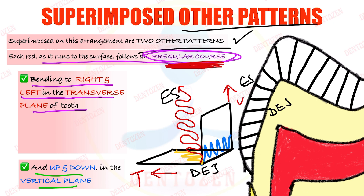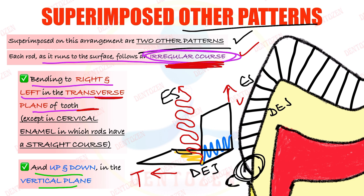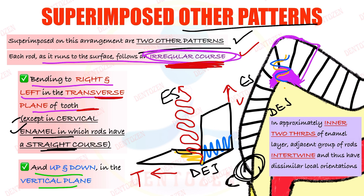There is one exception: in the transverse plane in the cervical region, the enamel rods do not bend left and right but remain straight. Additionally, in approximately the inner two-thirds of the enamel, adjacent groups of rods intertwine — they go around each other — making the pattern even more complex with different orientations.